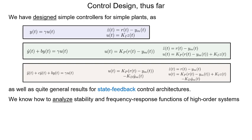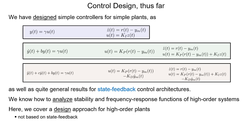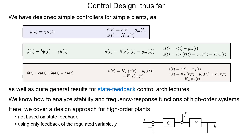We know how to analyze the stability and frequency response of high-order systems, but we had done limited design, mostly based on state feedback. Here we cover a design approach for high-order plants that is not based on state feedback, and instead uses only feedback of the regulated variable Y. The disturbance is notated with the letter F, appearing between the controller and the plant, instead of the usual D, because D will be used as the symbol for the denominator of a transfer function.